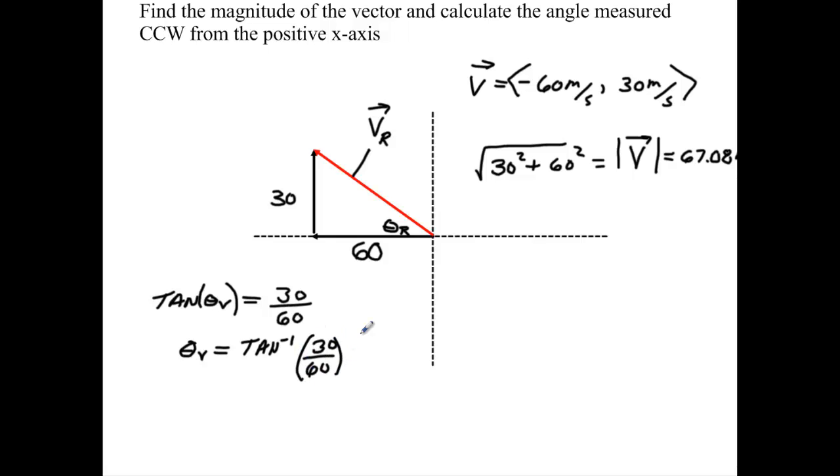And your calculator is going to be second tan. Make sure that your calculator is in degrees, and I'm going to do second tan, 30 divided by 60. When I get that, I get 26.57 degrees. So that means this angle here is 26.57. I'll go ahead and put that in.